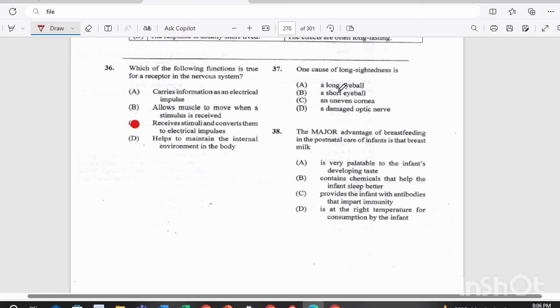Question 37. One cause of long-sightedness is A, a long eyeball, B, a short eyeball, C, an uneven cornea, or D, a damaged optic nerve? What's the answer there? The answer there would be B, a short eyeball.